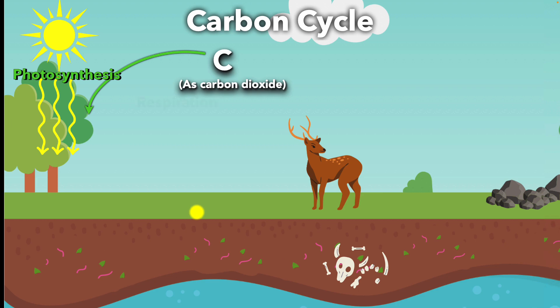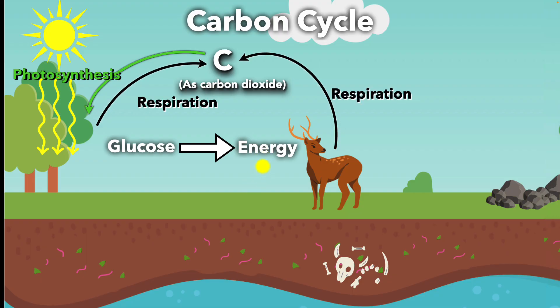Next up, respiration. Respiration is a process in which plants and animals break down glucose to get energy. This process releases carbon dioxide back into the atmosphere. Any process that adds carbon to the atmosphere is called a carbon source. So respiration is a carbon source.